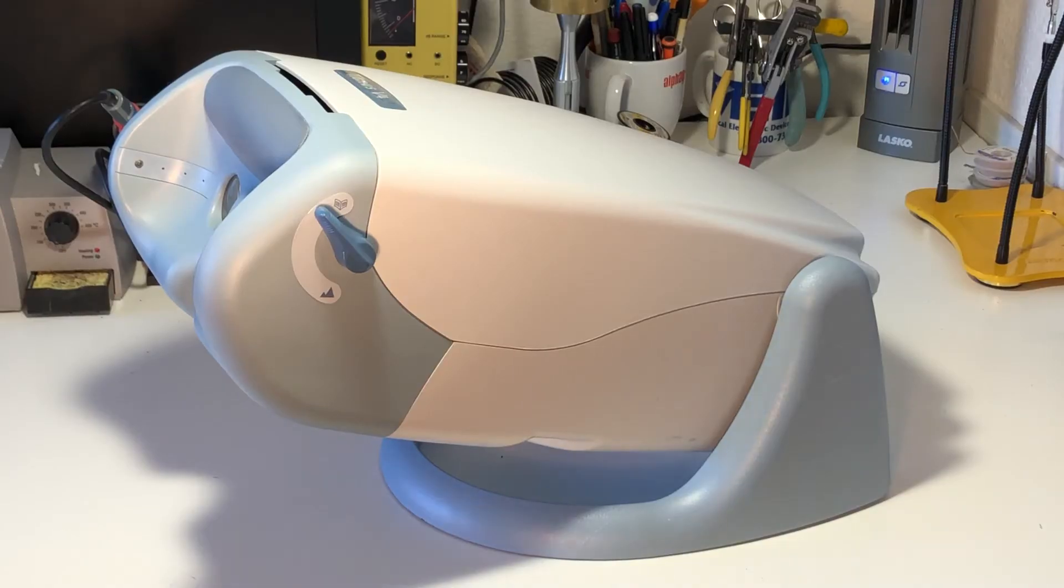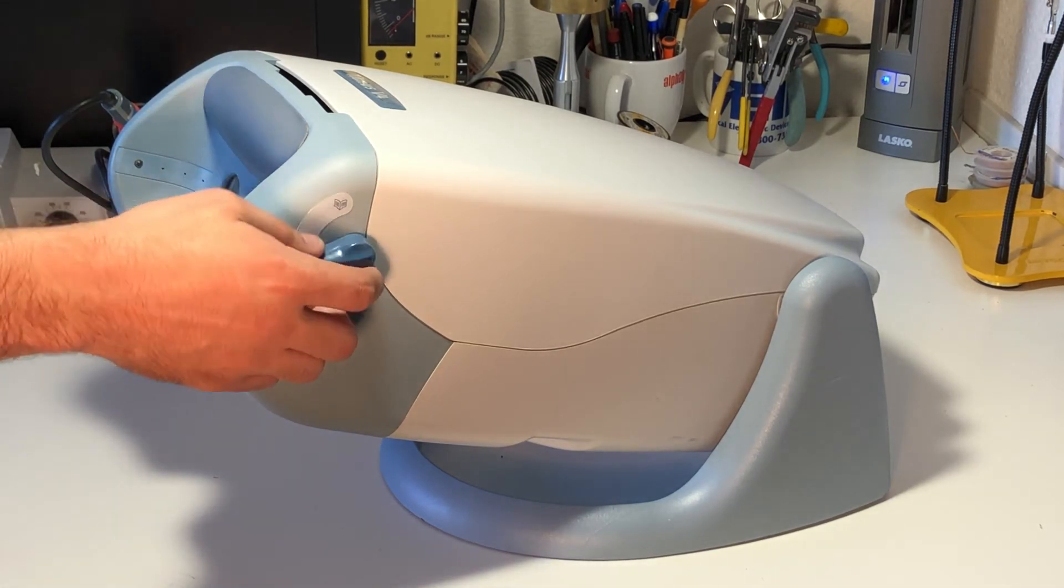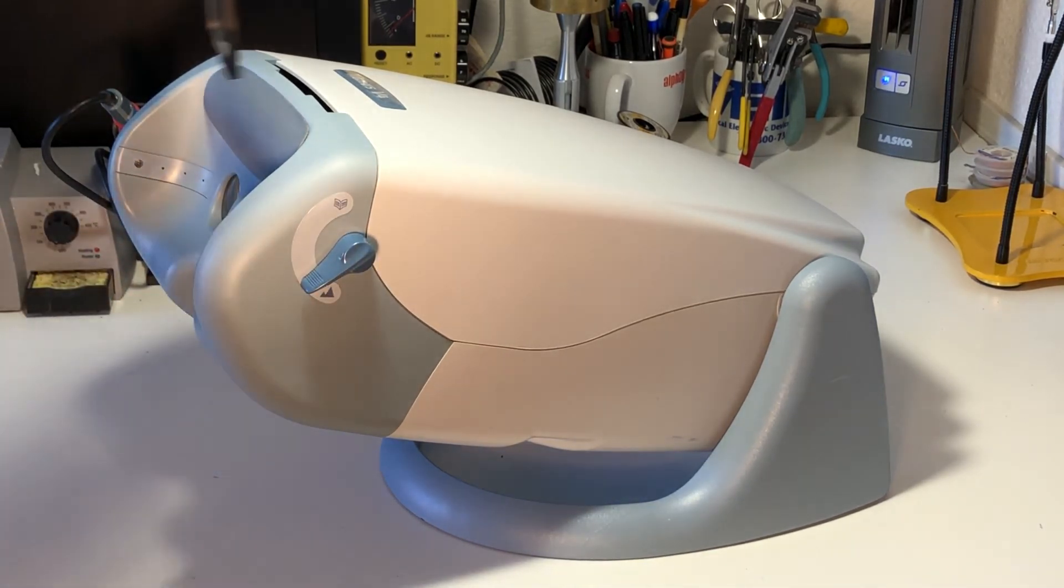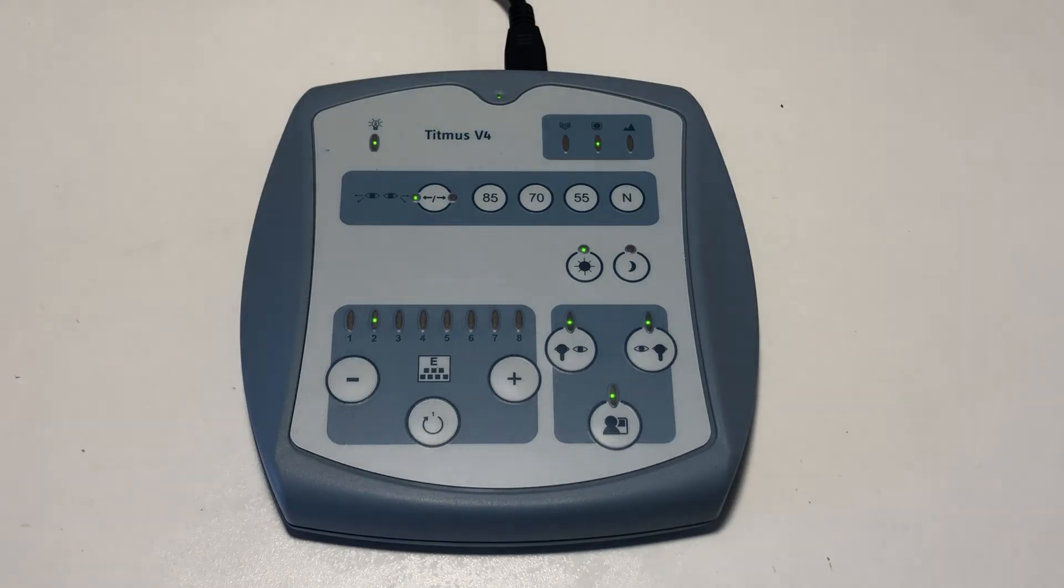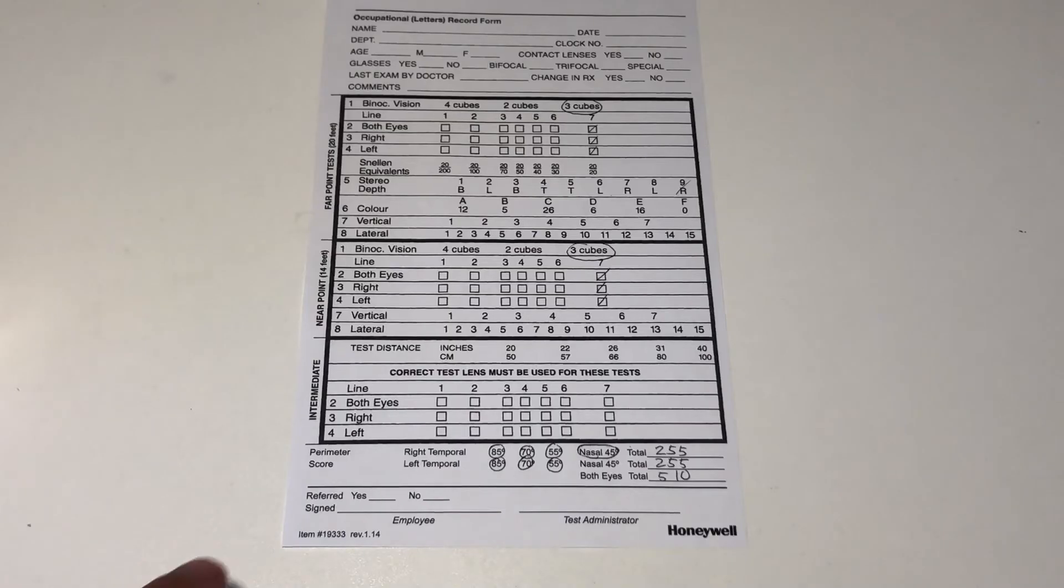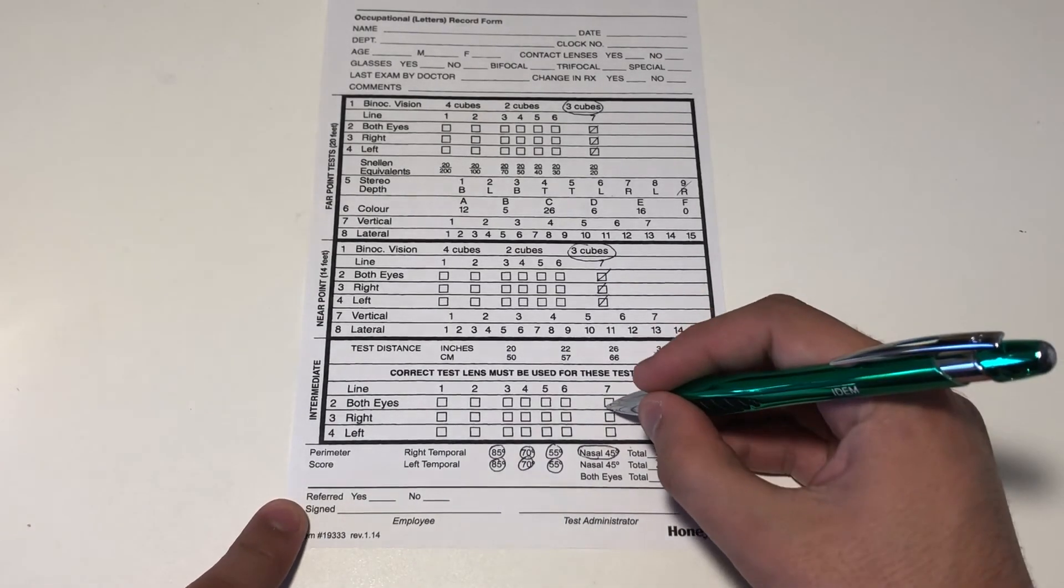Change the near far lever to the far position and slide the intermediate lens into the vision screener. Now repeat slides 2, 3, and 4. Record the results in the intermediate section of the record form.